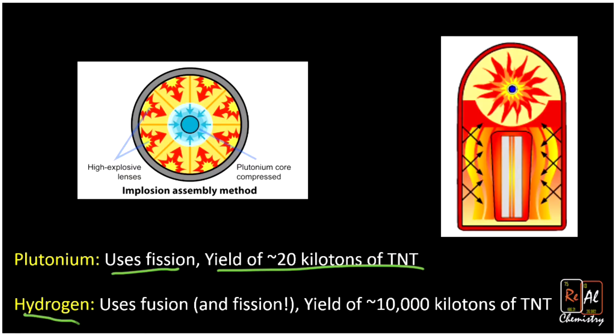Hydrogen bombs actually use fusion, which fusion means the bringing together of two nuclei. So it's the opposite process, still a nuclear reaction, still destroys mass and creates a bunch of energy. And actually, in the process of setting off a hydrogen bomb, you use fission as well. Actually, we'll see most of the energy still comes from fission, but fusion plays a key role as well.